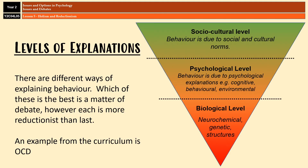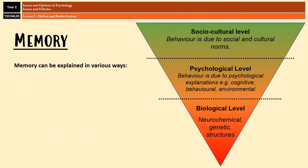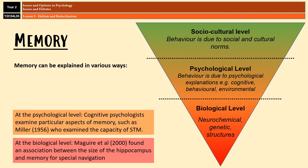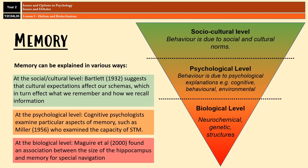Let's look at a couple of examples from the curriculum. Taking memory, at the biological level, Maguire et al. in 2000 found an association between the size of the hippocampus and people's memory for spatial and navigational tasks. At the psychological level, cognitive psychologists examine particular aspects of memory, like Miller in 1956, who examined the capacity of short-term memory, or Peterson and Peterson, who looked at the duration of short-term memory. At the highest level of explanation, you have Bartlett from 1932, who suggests that cultural expectations affect our schema, which in turn affects what we remember and how we recall information.